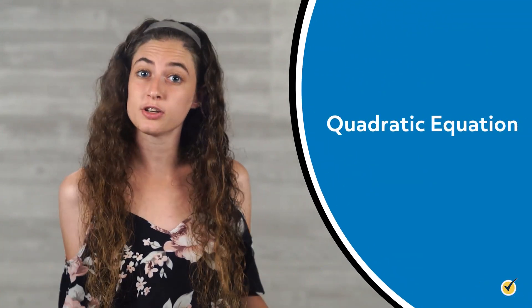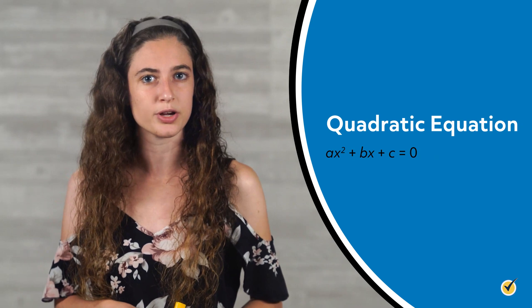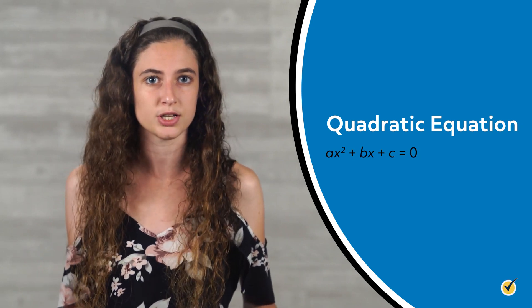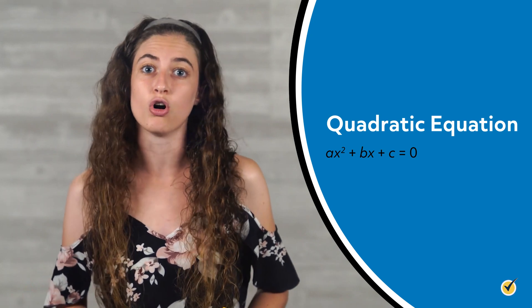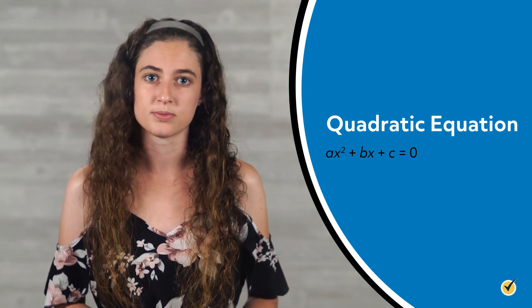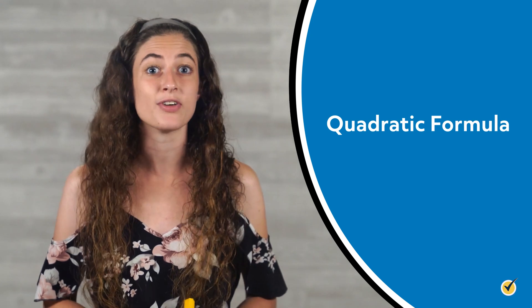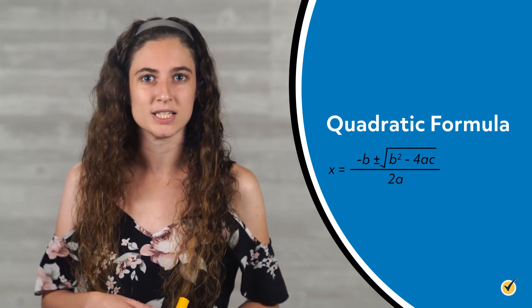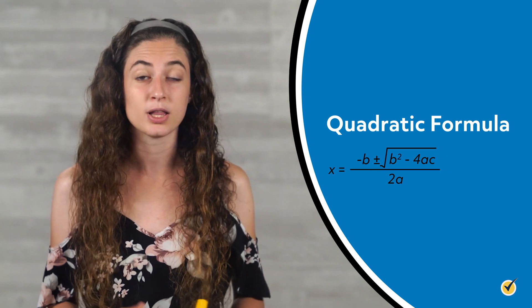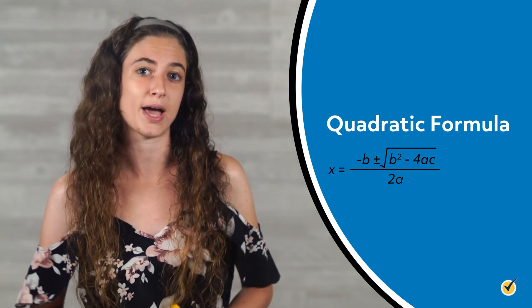Let's start by talking about quadratic equations. A quadratic equation in standard form is written as ax squared plus bx plus c equals 0, where a doesn't equal 0, and a, b, and c are all real numbers. The quadratic formula is an algebraic equation that helps solve any quadratic equation. The formula is x is equal to negative b plus or minus the square root of b squared minus 4ac, all over 2a.